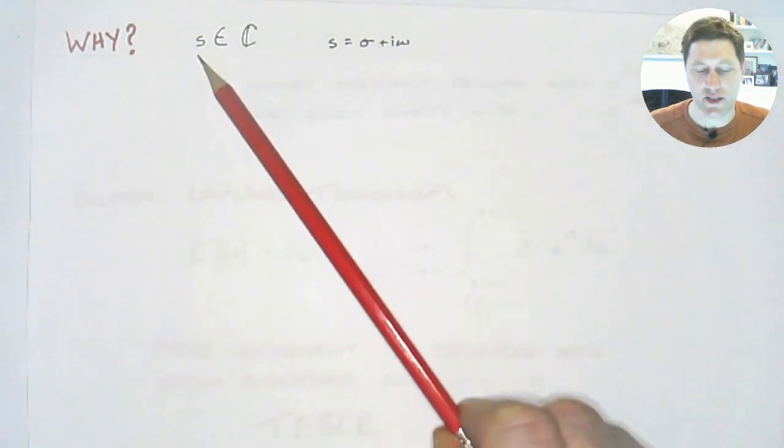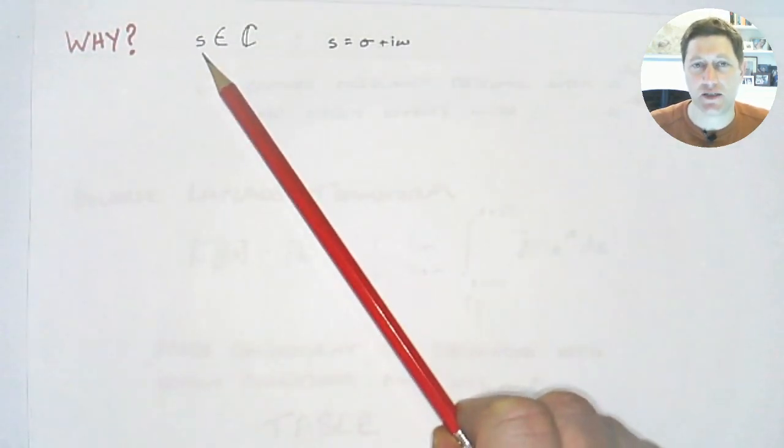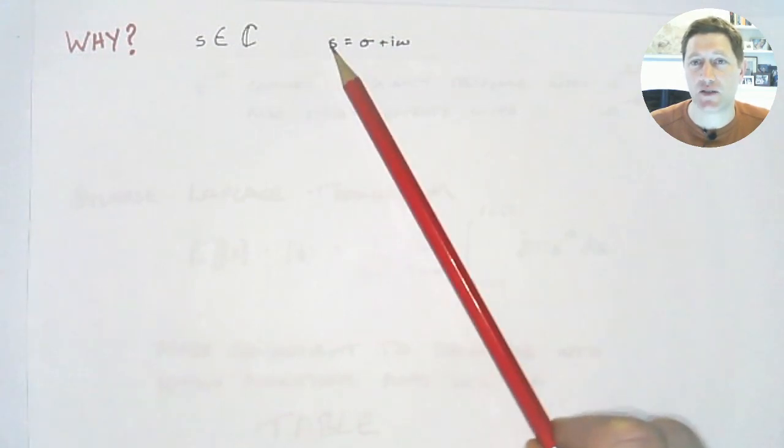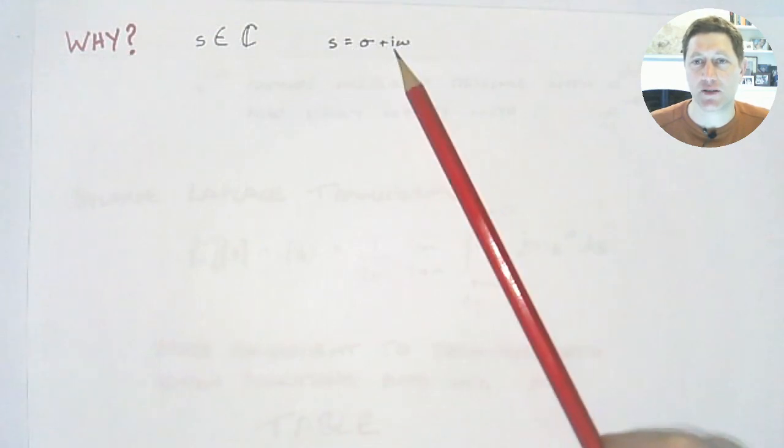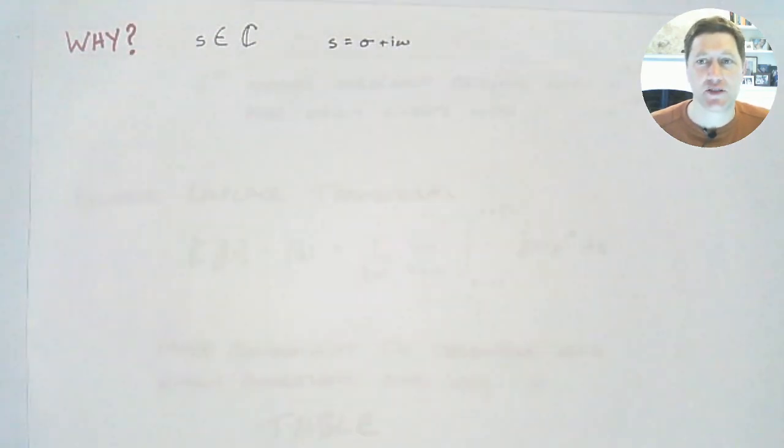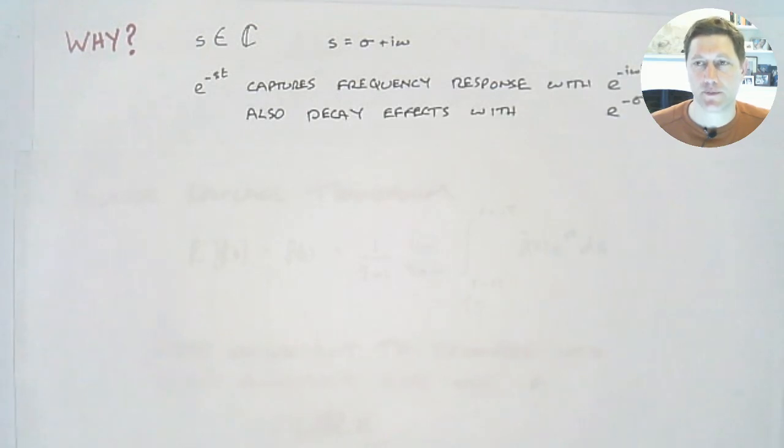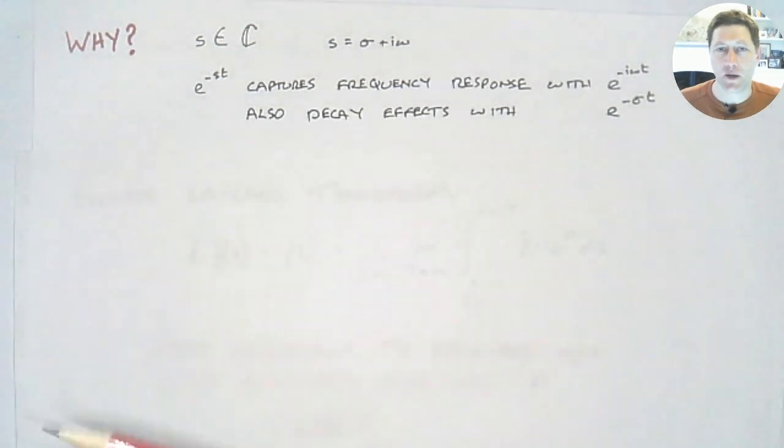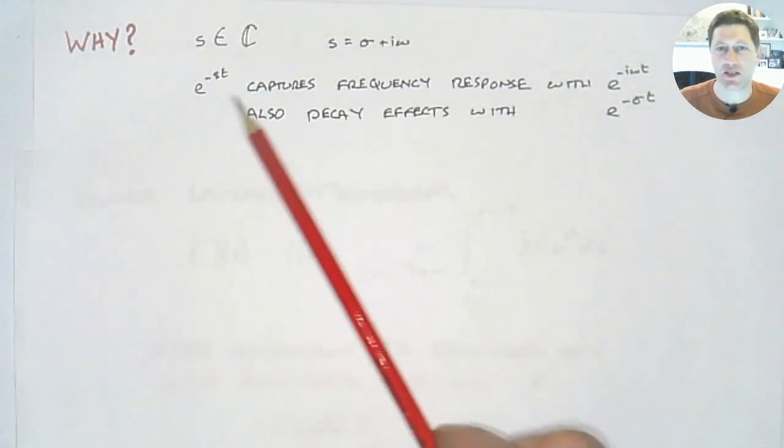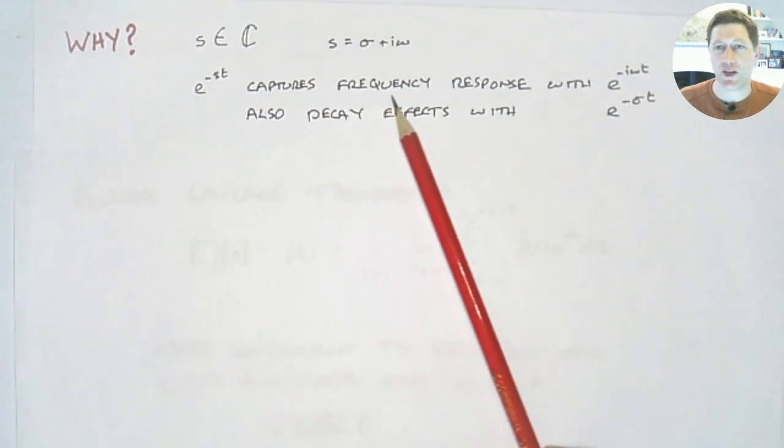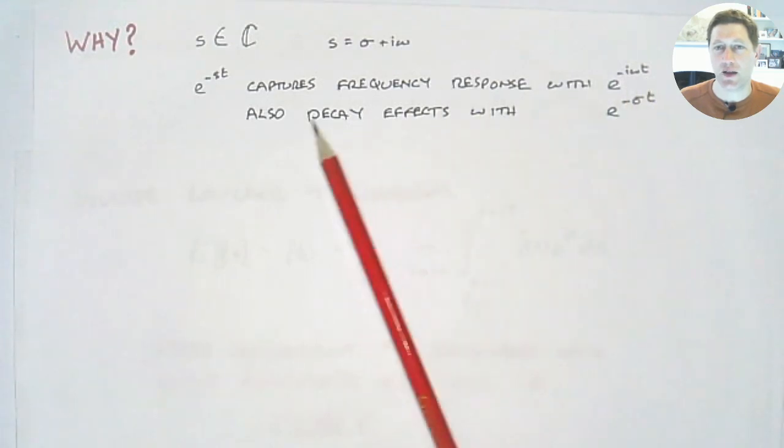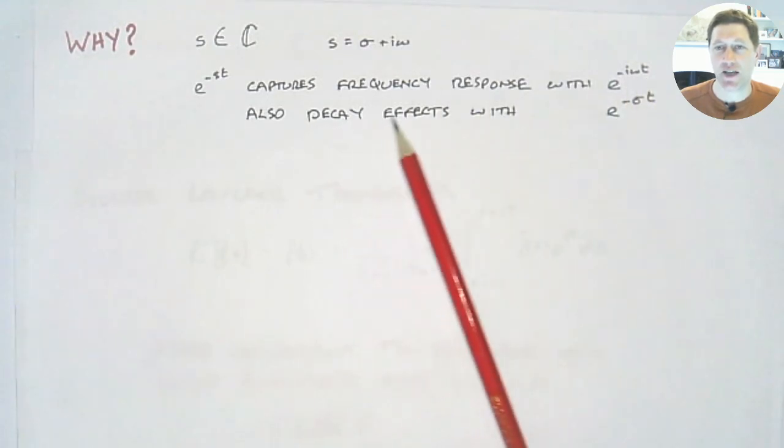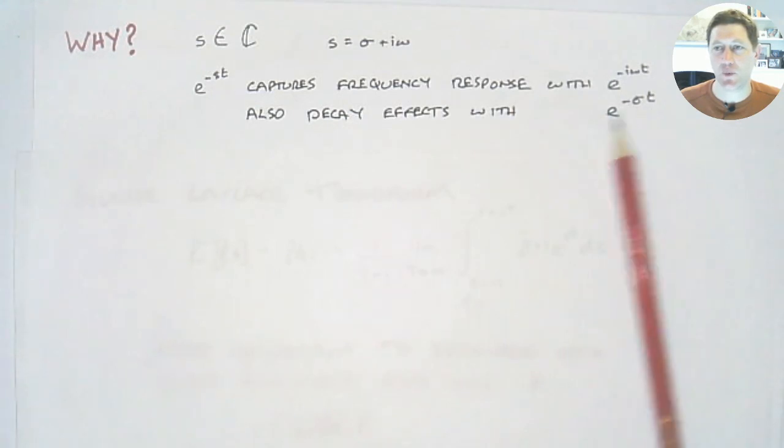What does it mean and why do we do it? First thing to note, s is a complex number. So s is something like σ + iω, it has a real part and it has an imaginary part. And that gives us a lot of capability. So when we have our term e^(-st), we can capture the frequency response of a system or an input with e^(-iωt).